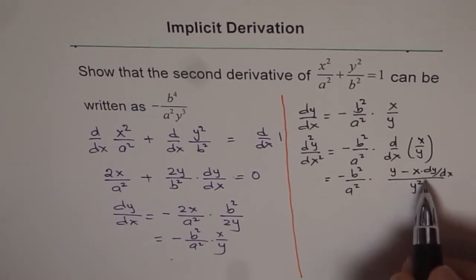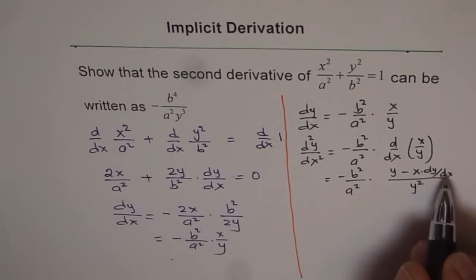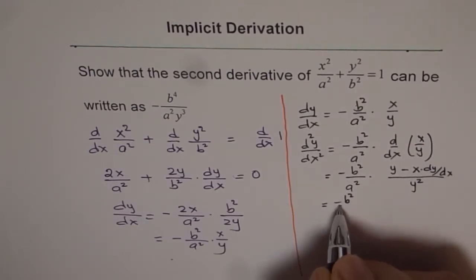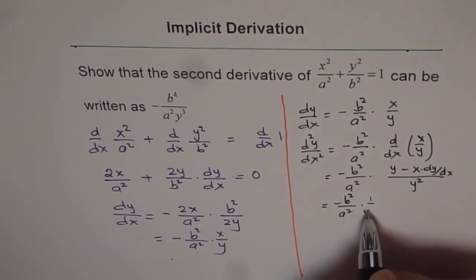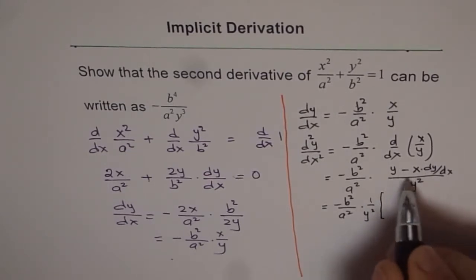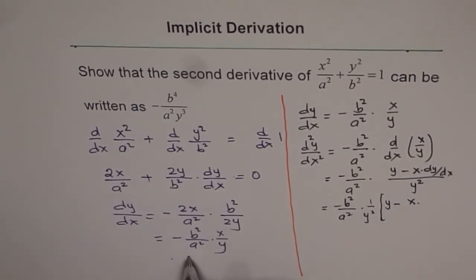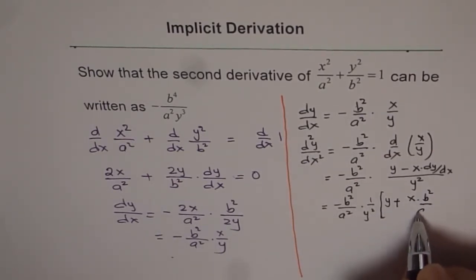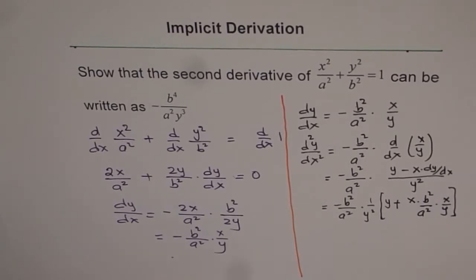Now we need to substitute dy/dx, which is known to us: minus b squared over a squared times x over y. We put that dy/dx in and simplify. So we get minus b squared over a squared times 1 over y squared, within brackets: y minus x times dy/dx. Since dy/dx is negative, the sign becomes positive: b squared over a squared times b squared over a squared times x over y.